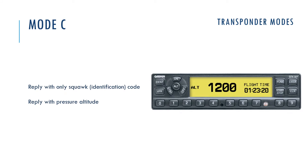Transponder Mode C can also reply not only with the squawk code, but with the pressure altitude. This model of transponder is integrated into the aircraft's altitude measuring system — the altimeter. That is why it knows the pressure altitude and can reply with this information to the ground station.